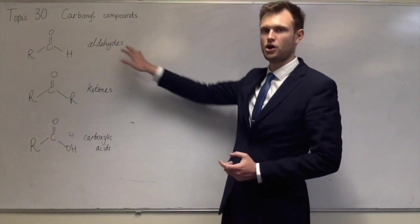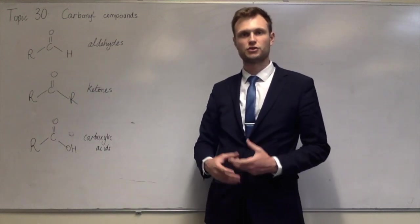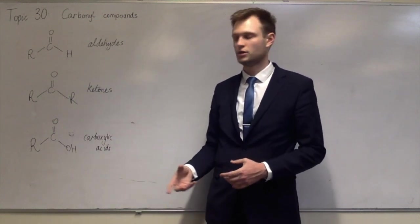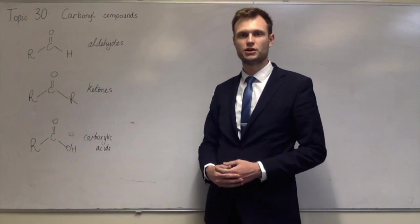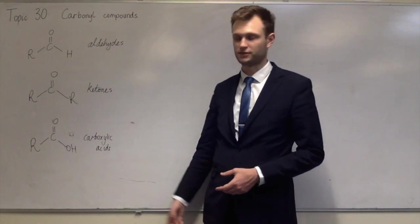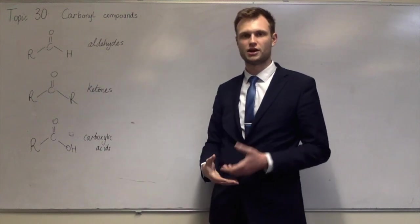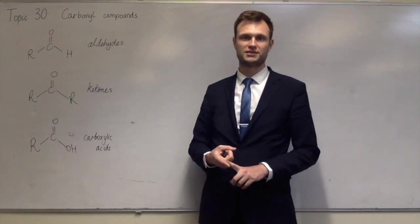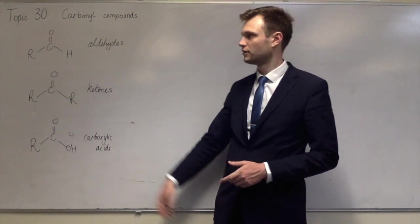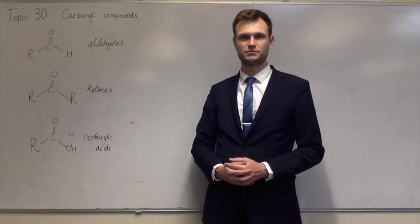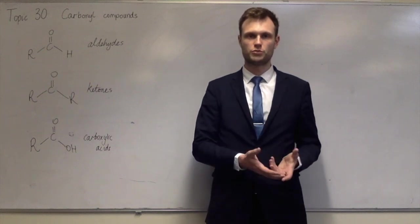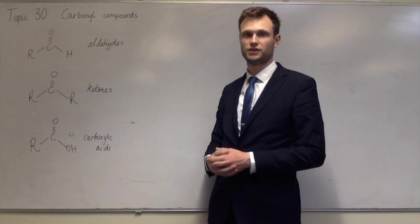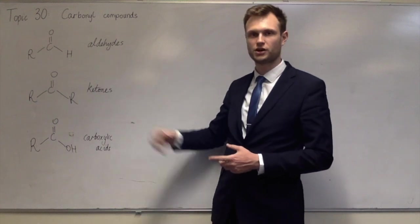So an aldehyde can be oxidized into a carboxylic acid. You can tell the difference between aldehydes and ketones by oxidizing it. If it oxidizes, then it's an aldehyde, because ketones can't be oxidized. If you had an aldehyde or a ketone, you'd react with acidified potassium dichromate and reflux it. An aldehyde would turn into a carboxylic acid, and the dichromate would be reduced to chromium 3+, which is green. The ketone would stay orange.